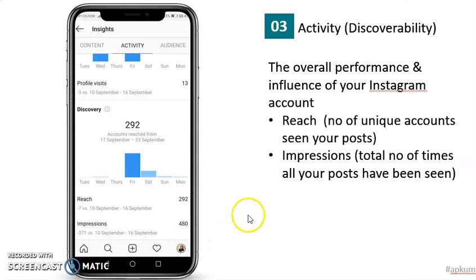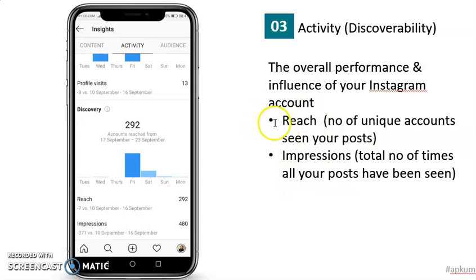You can also look at other activities — the performance and influence of your Instagram account — by reach and impression. Reach refers to the number of unique accounts that have seen your posts, and impression refers to how many times your post has been seen in total.